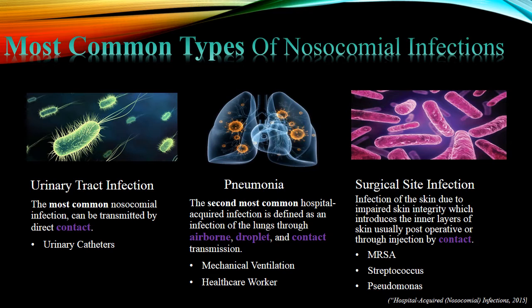That's why it's important to clean and sanitize every urinary catheter and use sterile techniques to avoid UTIs. The second most common is pneumonia, which can be hospital-acquired and transmitted three ways: airborne, droplet, and contact. This is typically seen with mechanical ventilation — if someone is on life support or using a respiratory aid to help them breathe, they can acquire pneumonia, especially over long periods.